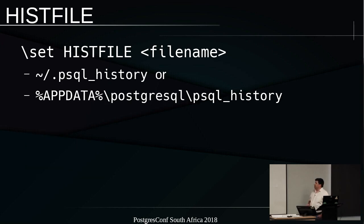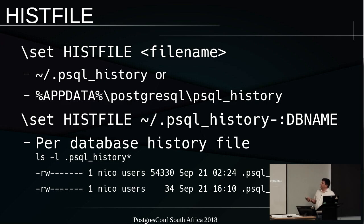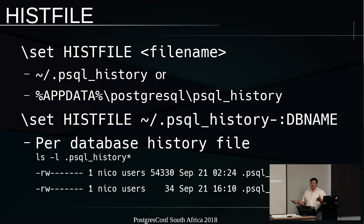You can specify a history file, which saves all the queries you've executed with your client. Normally the default goes into psql_history, and there's a Windows path for that too. You can also tell it to save a history file per database — for example, you'll have a history file for dvd_rental and a separate default one. If you specify a DB name, all queries for that specific database go into that file, so you can separate them per client.